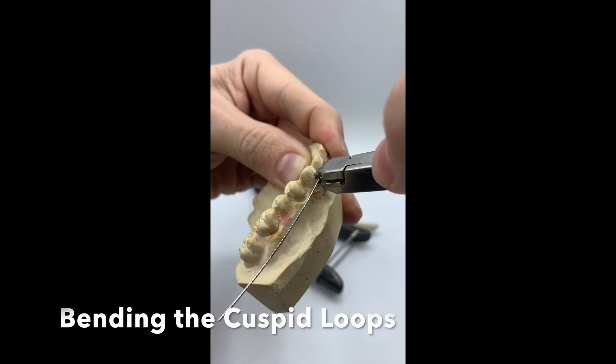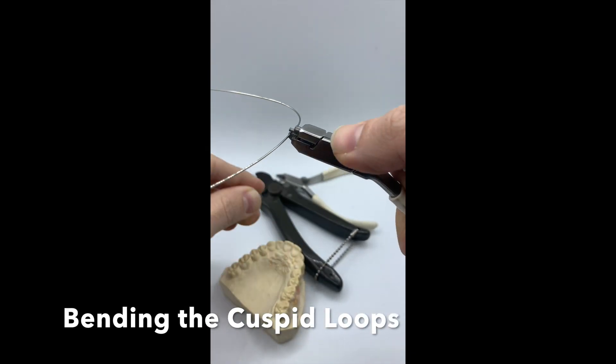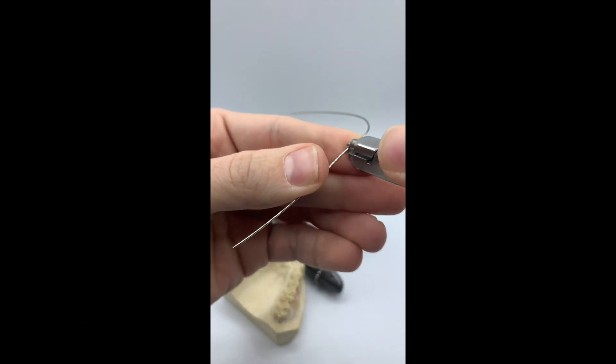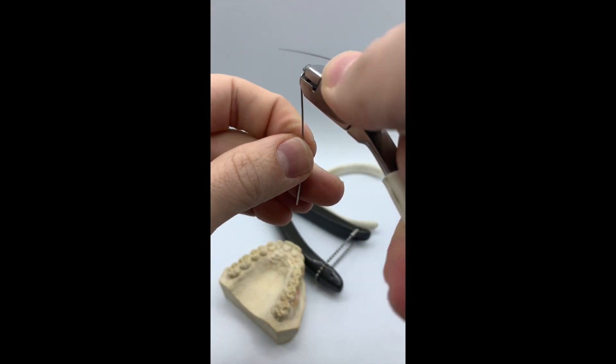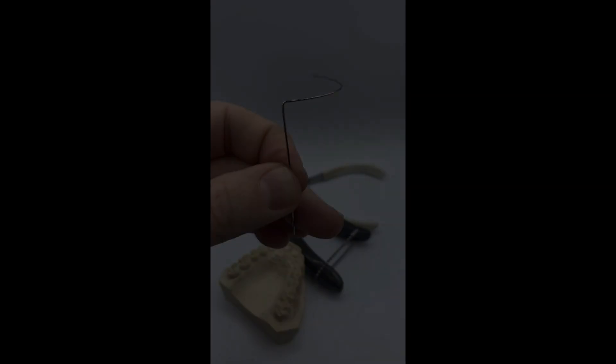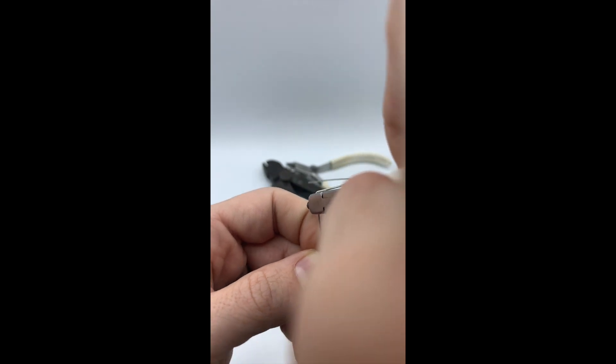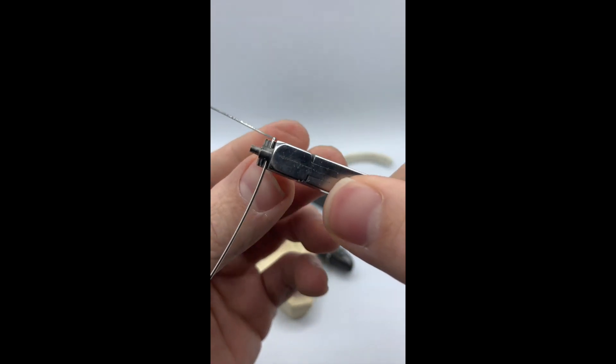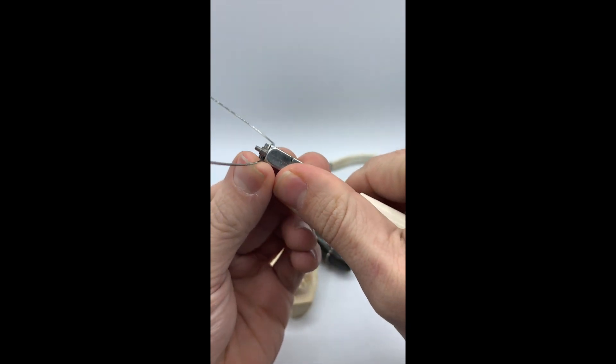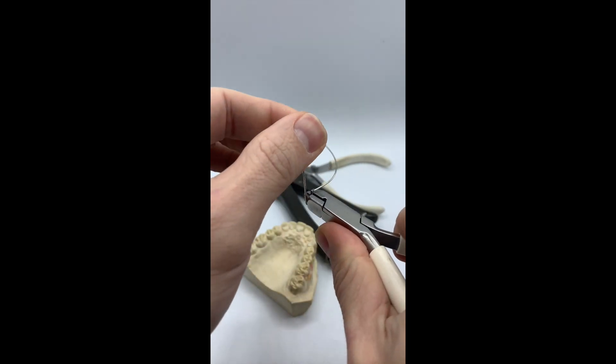For the cuspid loop, you want to make a 90 degree bend down with the wire at the line that you made. Now you want to make your loop. In one movement around your plier, bend the wire around your loop forming plier.